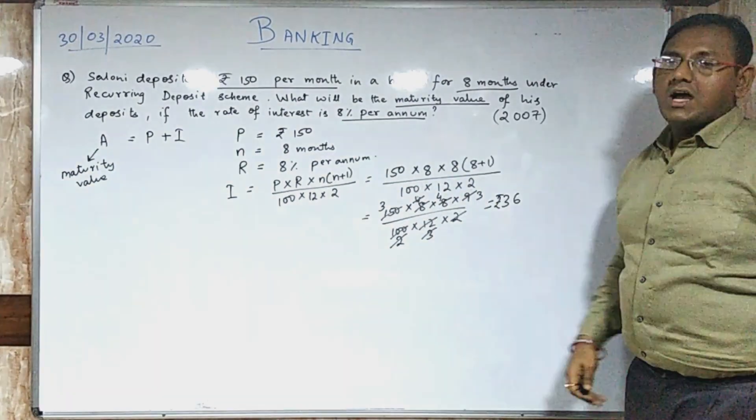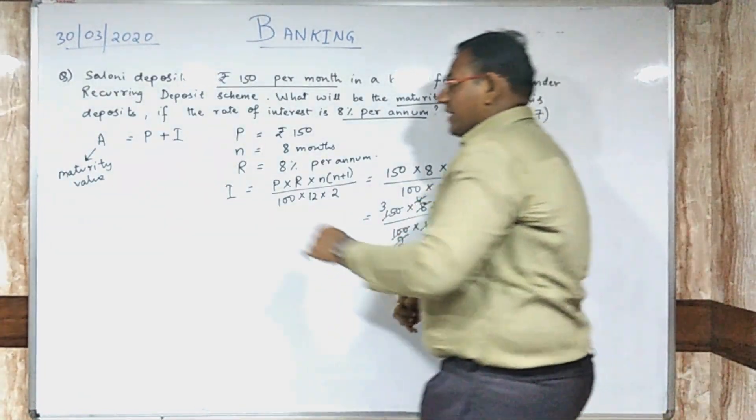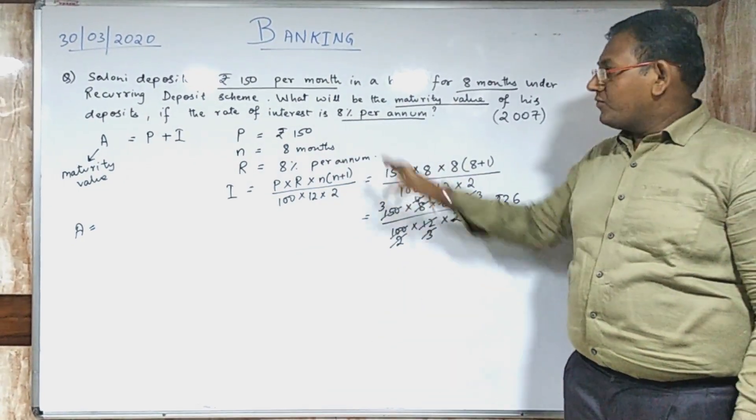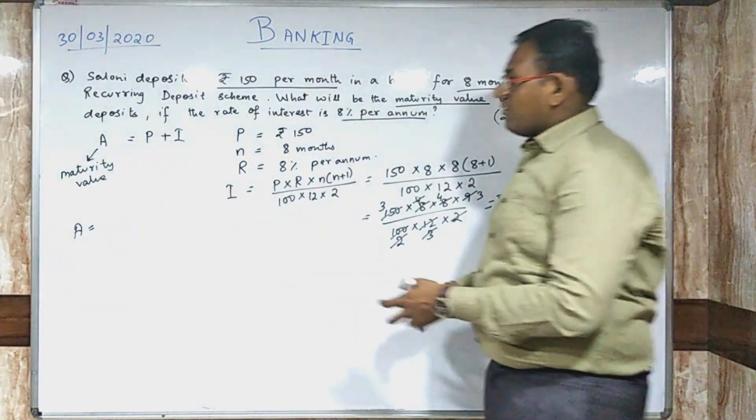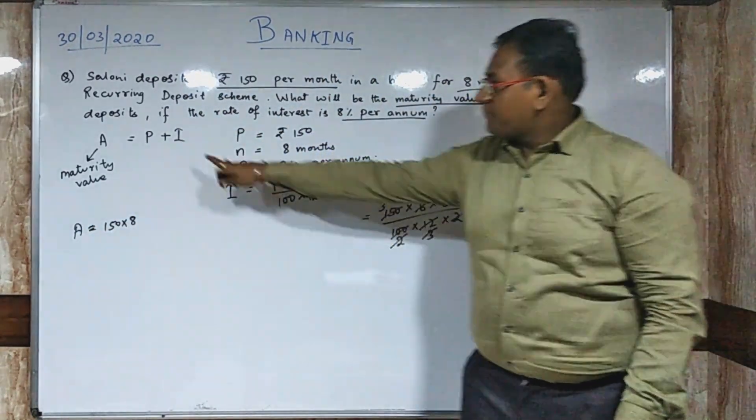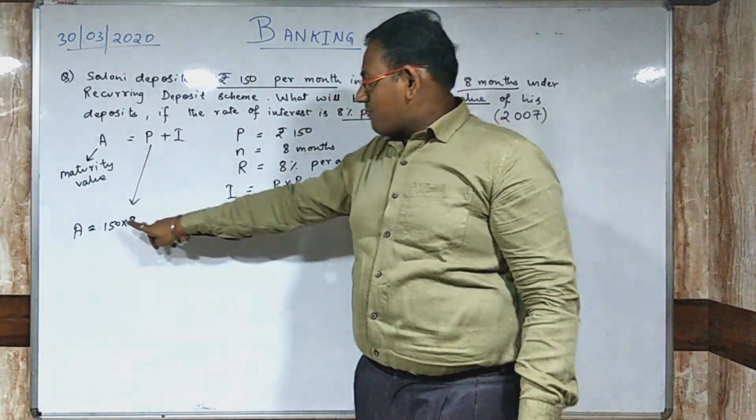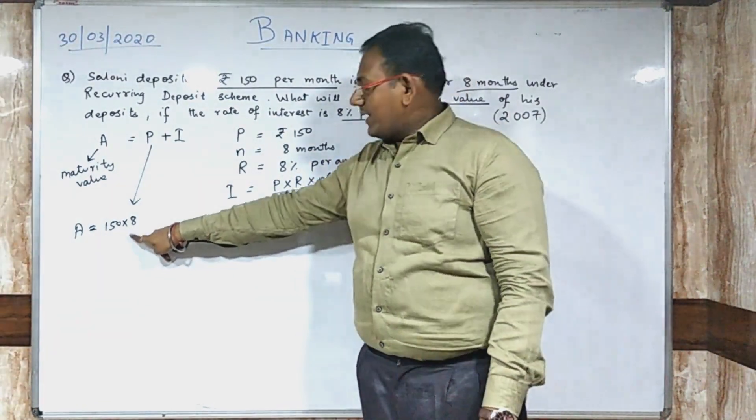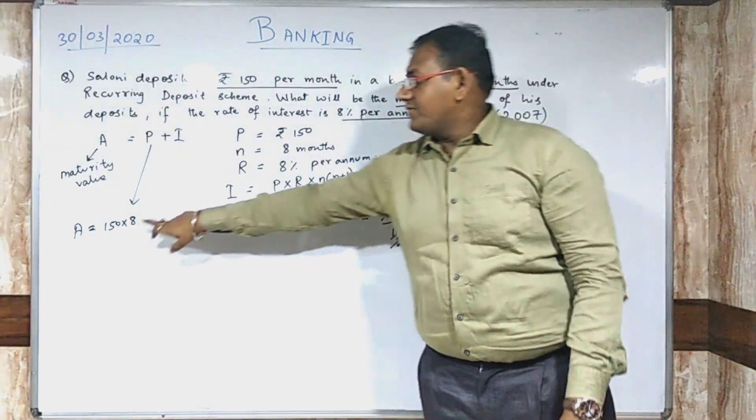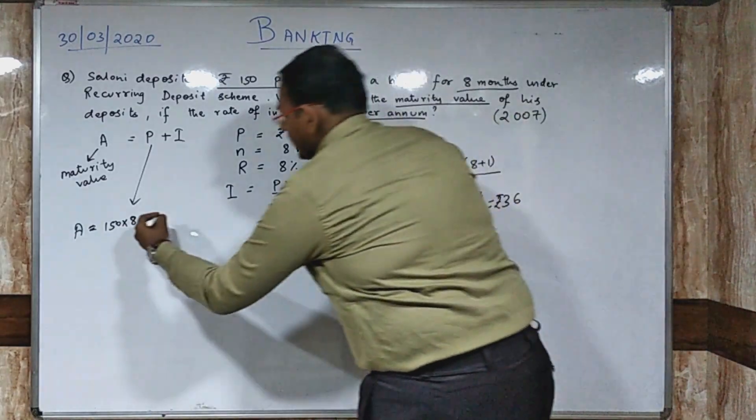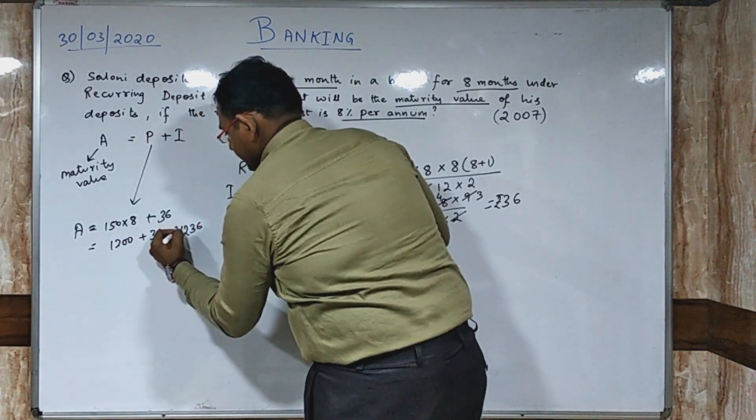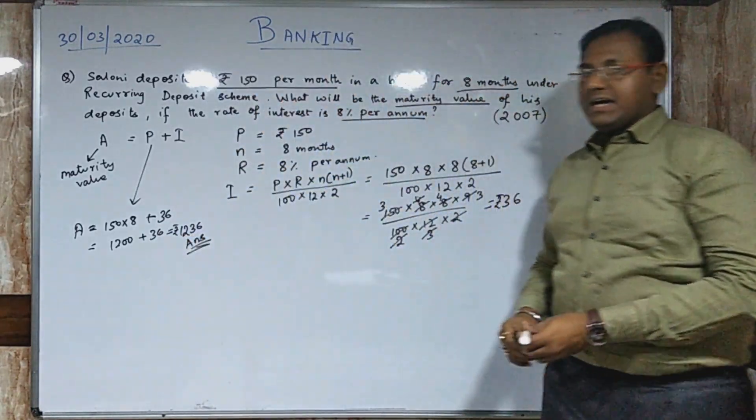But we don't require just interest, we require the amount or maturity value. Whenever we are calculating the amount, remember one thing: we are depositing this money for each month, for 8 months. So total principal deposited is 150 times 8, which is 1200 rupees. Plus the interest which is 36. We are getting 1200 plus 36 which gives you 1236. This is your answer. I hope this solution is clear to you.